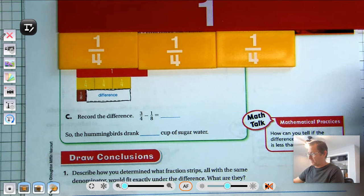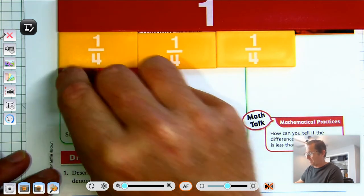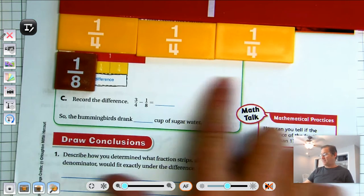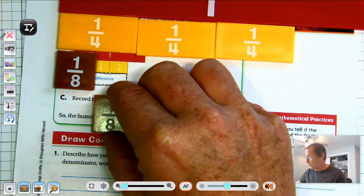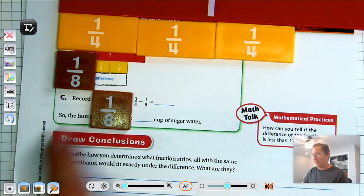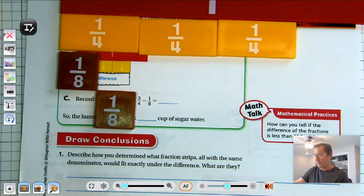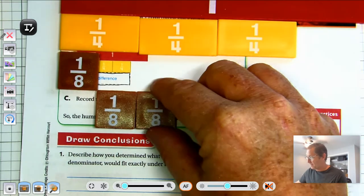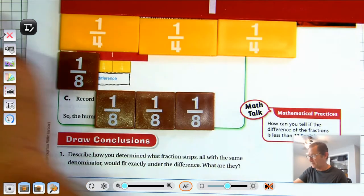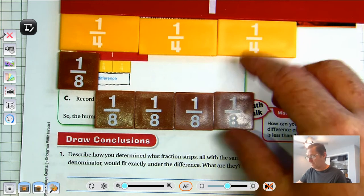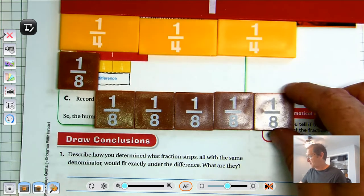And so we have three-fourths take away one-eighths. And we have to figure out the difference from here. Well, I'm pretty sure that one-eighth and one-eighth is one-fourth. So I'm going to put one-eighth there. And I'm going to keep putting one-eighths to see how many it takes to fill the difference.